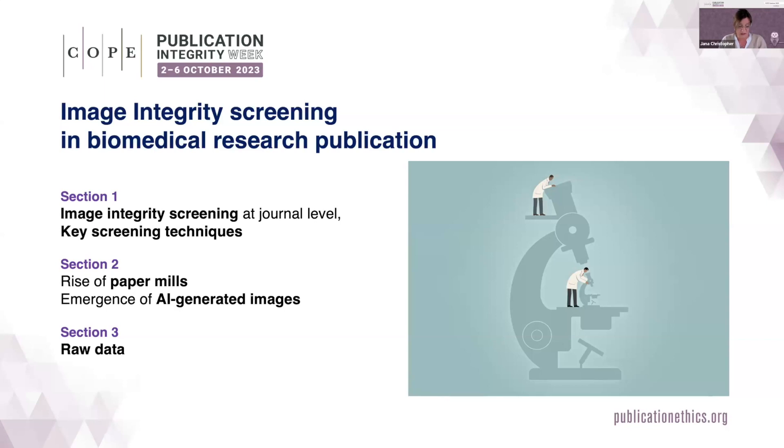First, I will focus on key screening techniques and useful tools to identify common image integrity issues. In the second part, we'll talk about the subject of organized fraud, that is paper mills and the figures that come with their submissions. And in the final section, we'll look at raw data, which is often essential in answering questions and correcting errors, and discuss what raw data should encompass and where it often falls short.